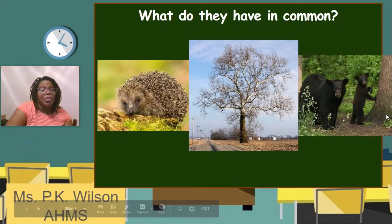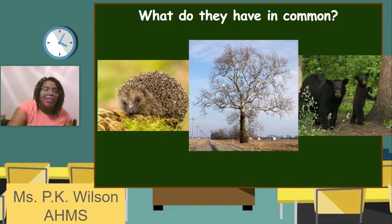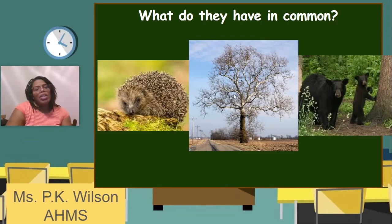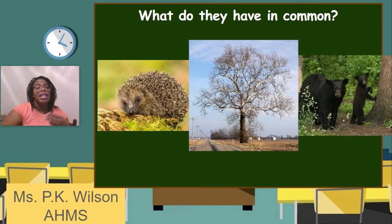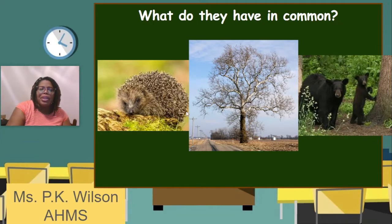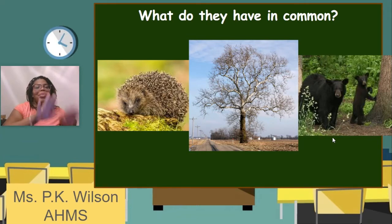You also saw these three pictures on day one: a hedgehog, a tree without any leaves, and some bears. These three organisms all live in Virginia and have figured out a way to survive through the changing seasons. One of those ways is slowing their lives down and looking like they are asleep or dead. Let's talk about the real terms for what they're doing.